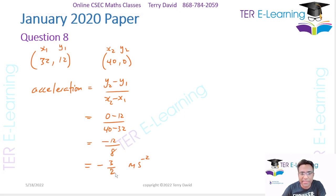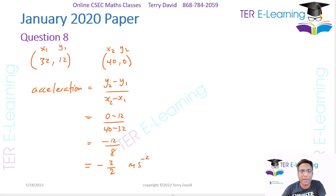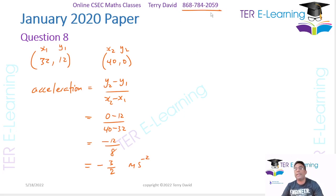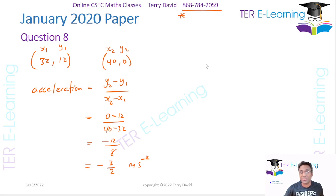So the acceleration is actually −3/2 meters per second squared. That takes care of this question. Please hit like and subscribe. If you're interested in online classes for maths, chemistry, physics, and additional maths, you can always send me a WhatsApp on the number shown. Take care, guys.